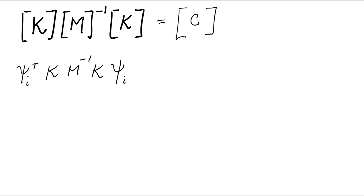We know that M phi lambda equals to K phi. So K phi is M phi lambda. So we can rewrite this as phi I transpose K M to the minus one. Then here we write M phi lambda.